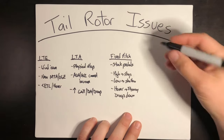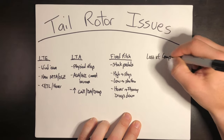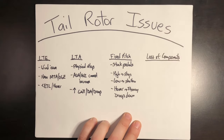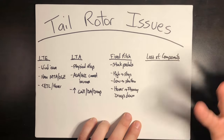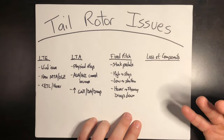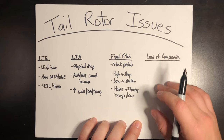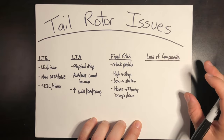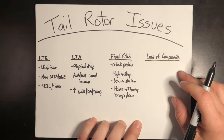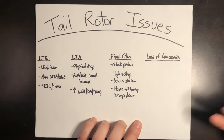Moving on from a fixed pitch, you have a loss of components. This could be a few different types — a loss in the drivetrain, a loss in the tail rotor itself where it's separated, a gearbox that blows out, or something similar. Something has broken on the helicopter and you no longer have a tail rotor doing anything for you. There's a great video of an Apache in Afghanistan that had a tail rotor completely separate from the aircraft, and the helicopter managed to fly another 10 miles and safely land at an airfield.